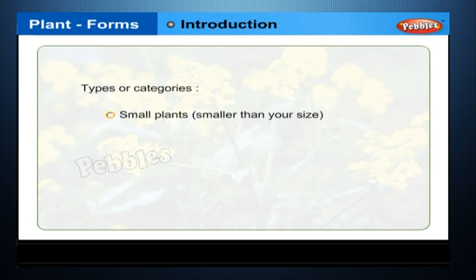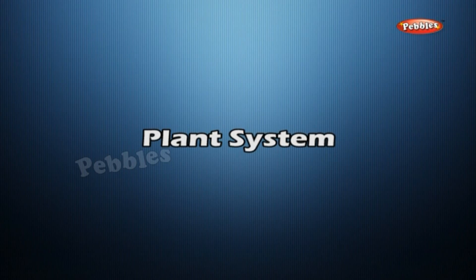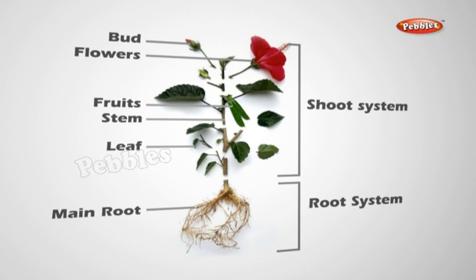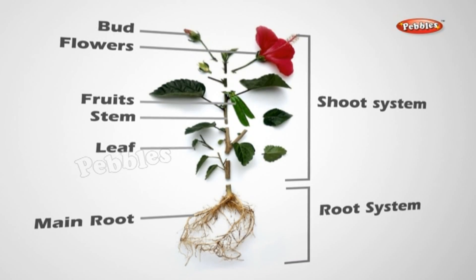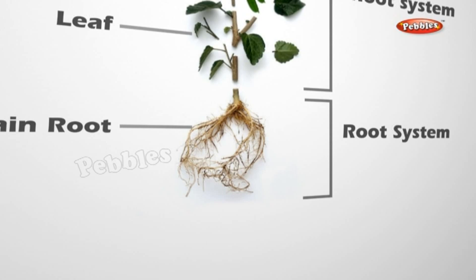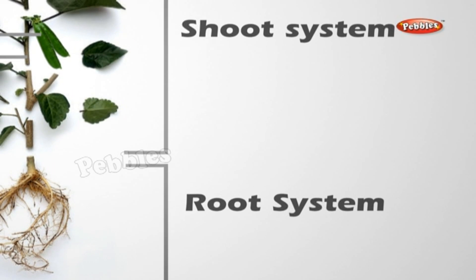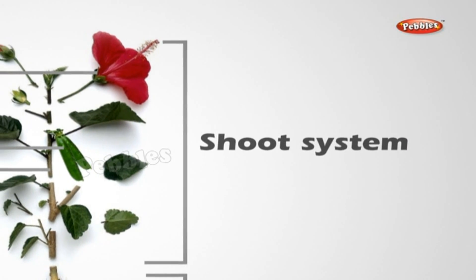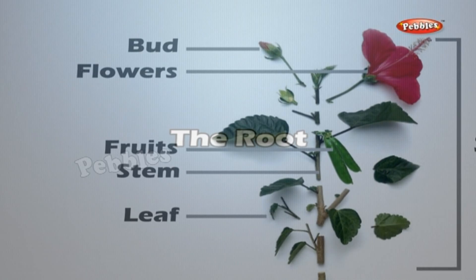Plants can be categorized by size: small plants smaller than your size, medium-sized plants about your size, and big plants taller than you. If you dig up a small plant like a mustard plant and examine it carefully, you will notice it has two parts. The underground part is called the root system, consisting of a main root and branching roots. The green part above the ground is called the shoot system, consisting of the stem, leaves, buds, flowers, and fruits.